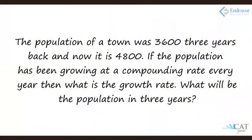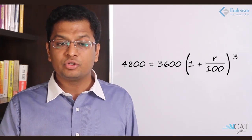Another example: the population of a town was 3600 three years ago and is now 4800, growing at a compounding rate annually. What is the growth rate, and what will the population be after three more years? For the first part, using the compound interest formula: 4800 = 3600 × (1 + r/100)³. Solving this gives r = 10%, so the annual growth rate is ten percent.